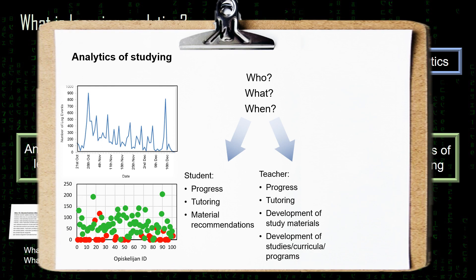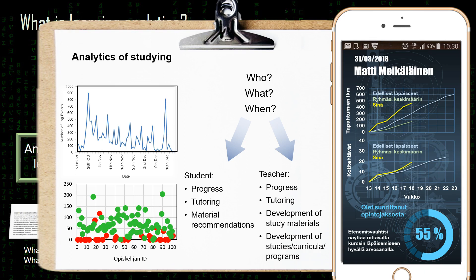This shouldn't be only the teacher's tool. It would be great if we could better serve students by providing them access to the data — for example using graphs like this. On the upper graph there is the number of log events for the student in yellow, the group average in green, and the previous cohort's past students in blue. The lower graph is for completed assignments, and the percentage shows the overall progress in the course.